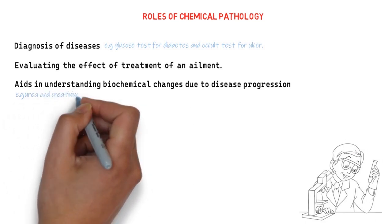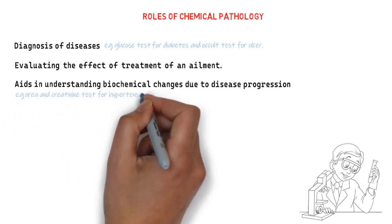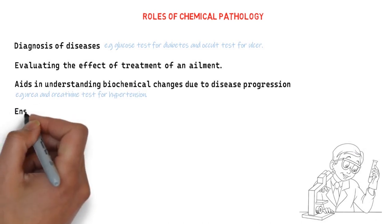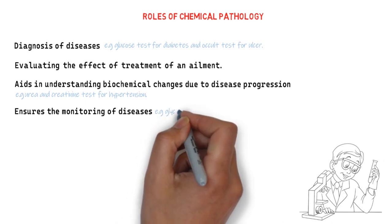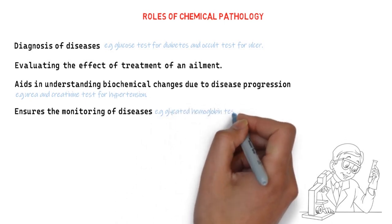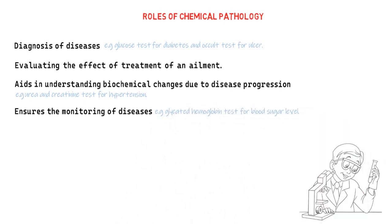For example, the urea and creatinine test for hypertension. Chemical pathology also ensures the monitoring of a disease. For example, glycated hemoglobin test monitors the blood sugar level of a patient.